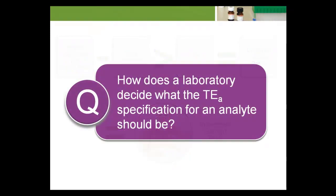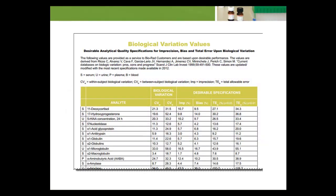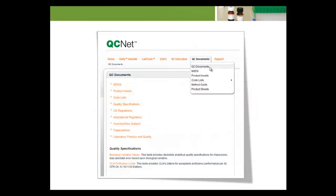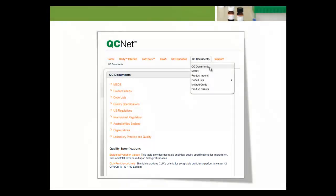How does a laboratory decide what the TEA specification for an analyte should be? This is not a simple question to answer, but a number of different lists of TEA specifications that include hundreds of analytes have been produced and are available from a variety of sources. One example are the quality specifications found in the QC Documents section at www.qcnet.com.